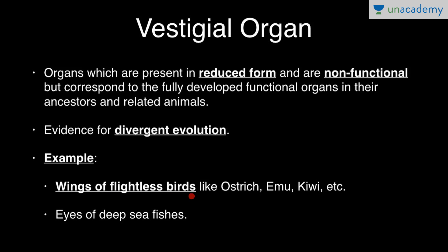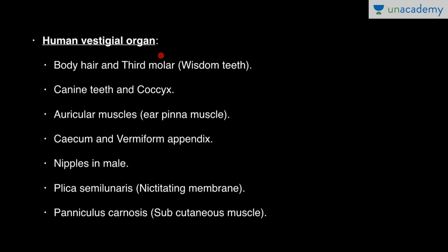Since ostrich, emu, and kiwi are flightless birds, their wings are non-functional, but wings were functional in their ancestors — making them vestigial organs. Similarly, eyes of deep sea fishes are vestigial. Humans have more than a hundred vestigial organs; important ones include body hair, third molars (wisdom teeth), canine teeth, coccyx, auricular ear pinna muscles, cecum and vermiform appendix, nipples in males, plica semilunaris (nictitating membrane), and panniculus carnosus (subcutaneous muscle).